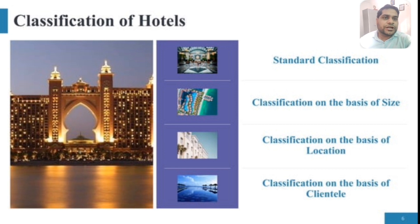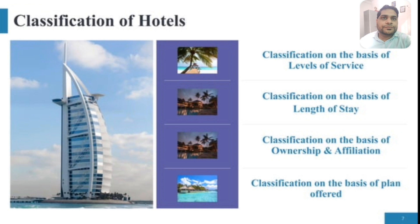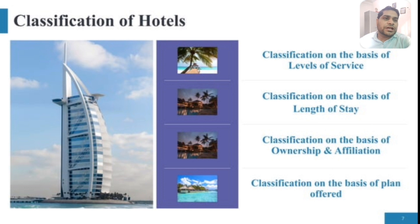There are many reasons behind these classifications. Classification on the basis of clientele, classification on the basis of level of services — such as Wi-Fi facility, hot and cold water facilities, and many other types of facilities — classification on the basis of length of stay, classification on the basis of ownership and affiliation, and classification on the basis of plan offered.